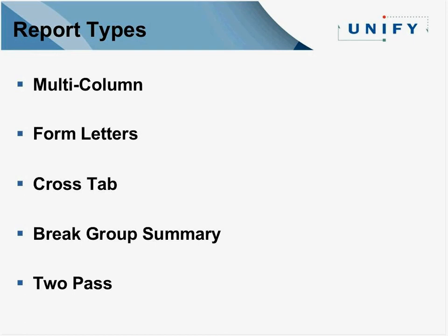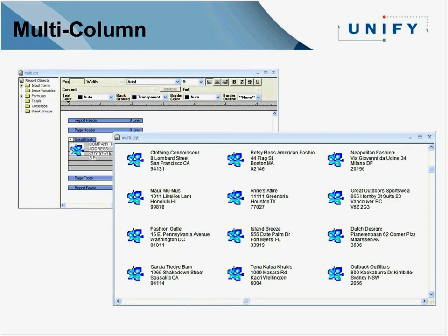I'll pause on the two-pass type — that's the ability to process the report data one time and then go through a second pass so you can do accumulations you might not have had in the first pass. A multi-column report is more like doing labels where you need data in multiple rows or columns, such as mailing address labels or showing small amounts of data to save space. You specify a number of columns and they'll repeat that many times in the report.